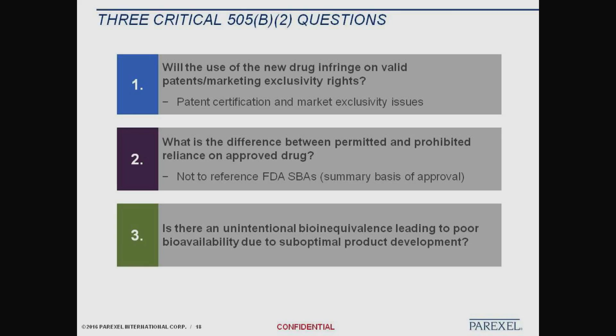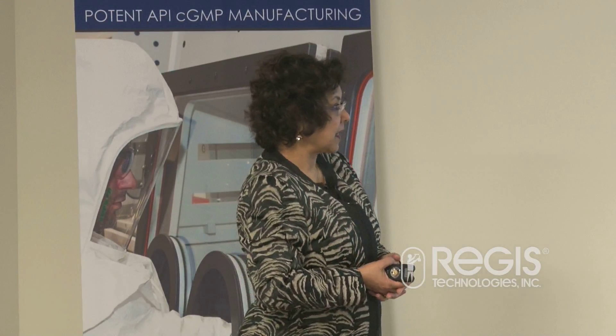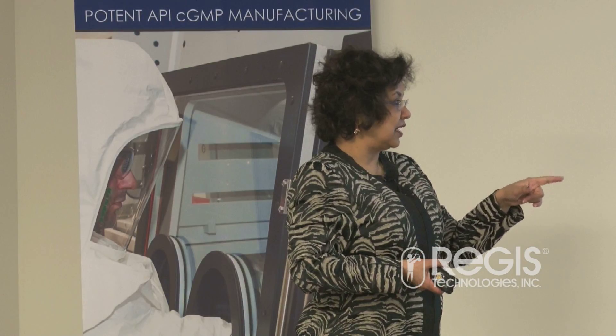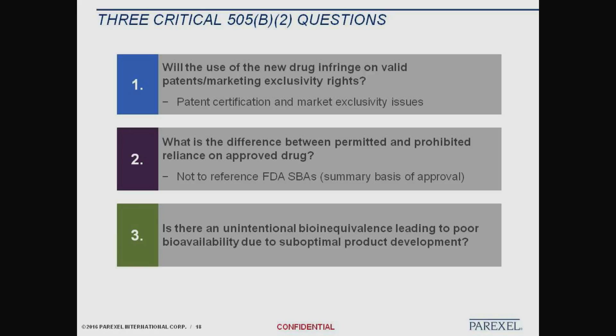If you are thinking of a 505(b)(2), you need to address three critical questions. First: will the use of this new drug infringe on a valid patent or marketing exclusivity? If it does, you better be careful and be ready for lawsuits. Second: what is the difference between permitted and prohibited reliance? You can't look at the FDA summary basis of approvals and use those for a 505(b)(2) — you need real, complete literature. Third: is there an unintentional bioequivalence failure leading to poor bioavailability? If you have a generic drug and you failed your bioequivalence study, that doesn't make it a 505(b)(2) application.